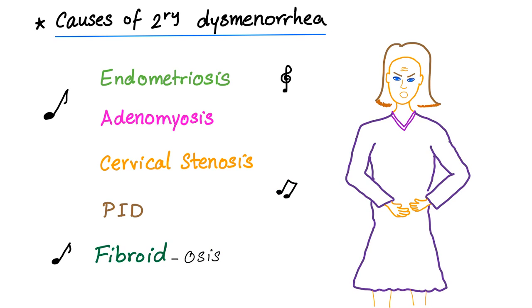Now, to the causes of secondary dysmenorrhea. Sing with me: endometriosis, adenomyosis, cervical stenosis, PID, and fibroids.